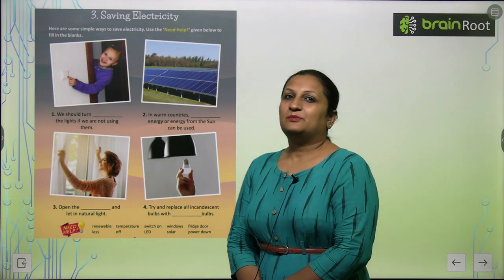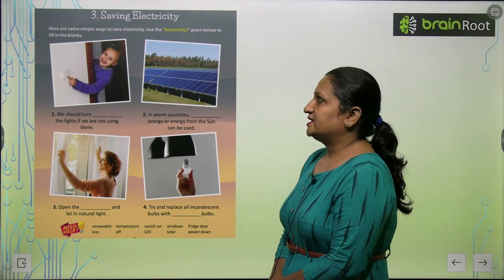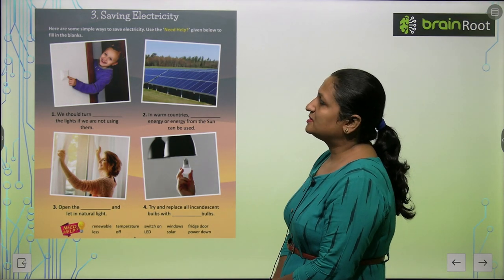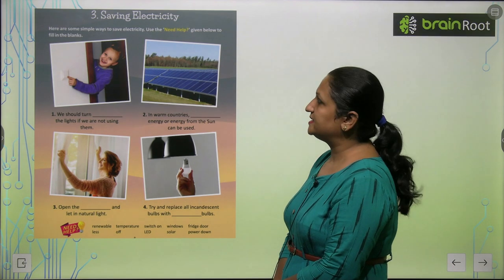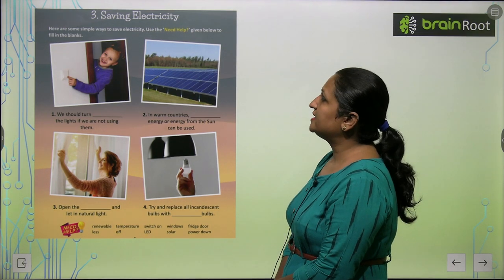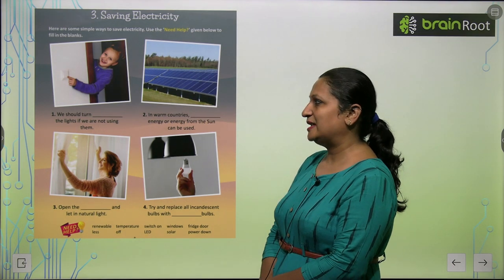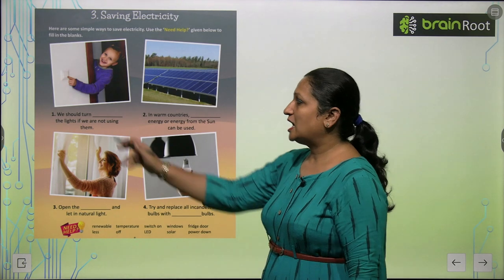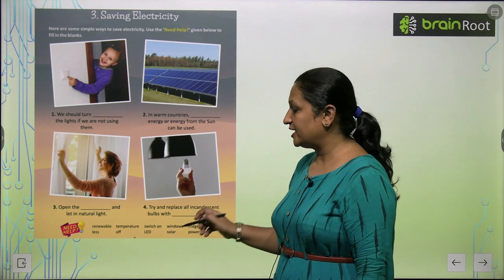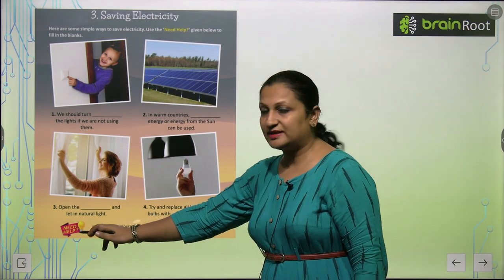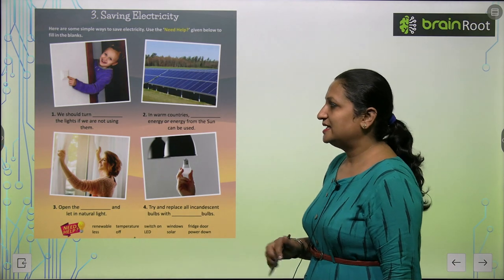Children, let's begin with chapter number 3: Saving Electricity. Here are some simple ways to save electricity. Use the word help given below to fill in the blanks. Yahaan par aapko blanks diye hai and you have to fill them with the help of the word help.